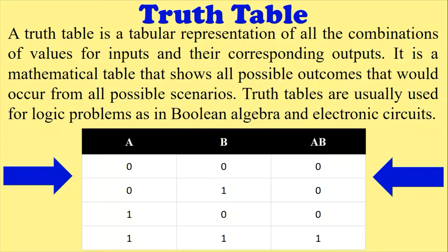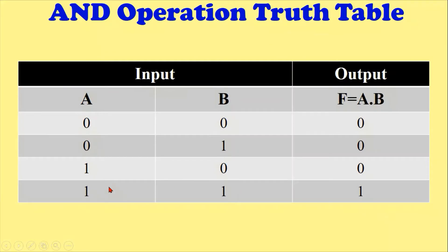Now let's look at the AND operation truth table, also called the AND logical gate truth table. There are two main columns: inputs and output. We have two inputs A and B. To represent decimal value zero between two variables, A will be zero and B will be zero. The next decimal value one is represented by A equals zero and B equals one.